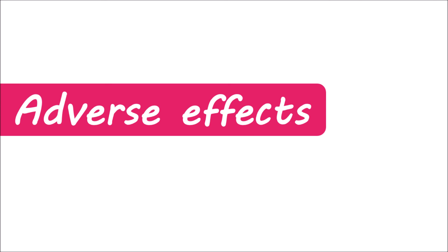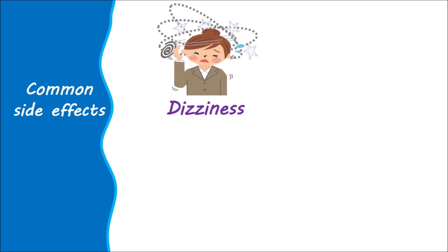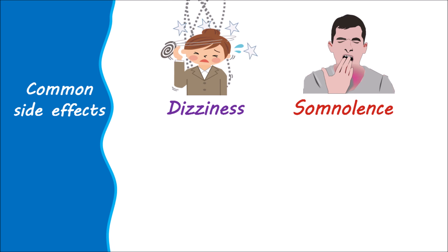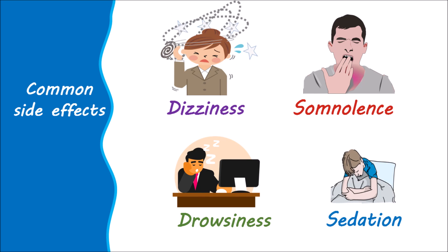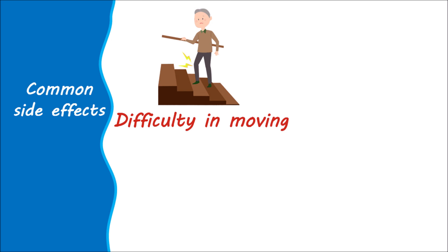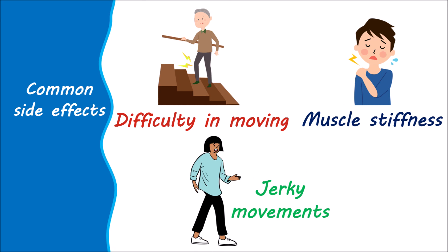Now let's see the adverse effects of risperidone. Common side effects mainly affect your brain and reduce alertness. It may cause dizziness, a state of lightheadedness that may impair your balance. It can also produce somnolence, where you feel sleepiness and lack of concentration, as well as drowsiness and sedation. Apart from these central depressant effects, risperidone can also impact your body movements, causing muscle stiffness and jerky movements. These effects are mainly due to its inhibitory action on dopamine receptors in a location of the brain where dopamine plays a key role in controlling body movements.